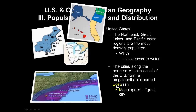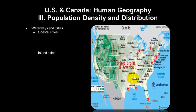BosWash, as geographers call it, is a megapolis — a gigantic city. One thing I want you to notice looking at these pictures: a lot of the major cities in North America, not just the United States, are along the coast.